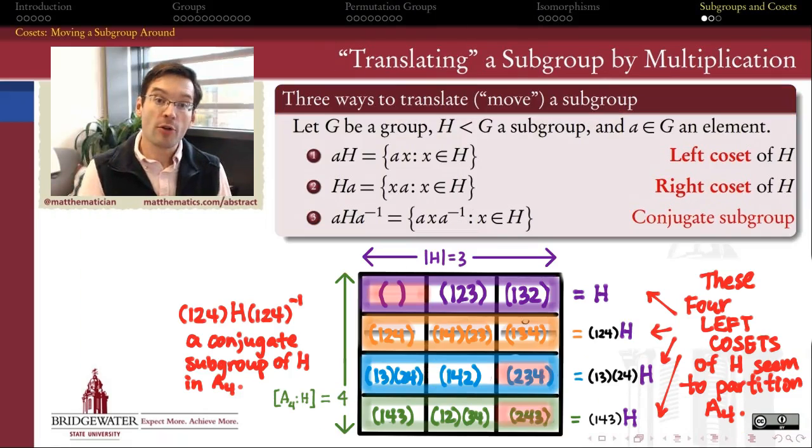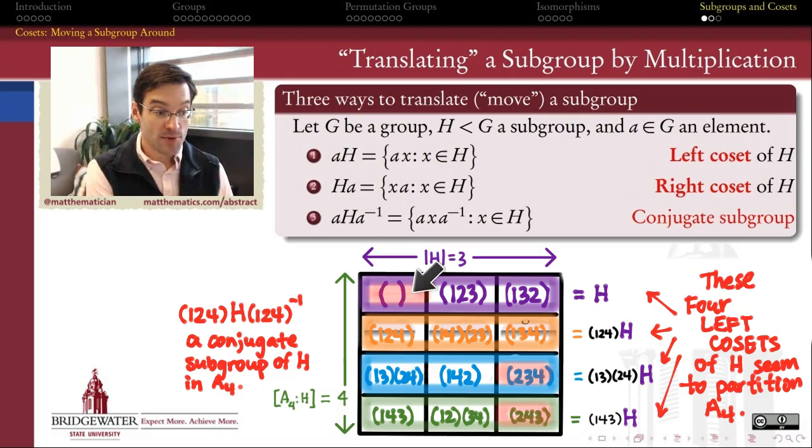So here is the motivating example that we worked in in the last video. In the group A4, which has 12 elements, the subgroup generated by the 3-cycle (1,2,3), that's got three elements. And we found out that these three left cosets of H account for the other 3, 6, 9 elements of A4 once and only once. So it seems like these four left cosets of H partition the group A4.